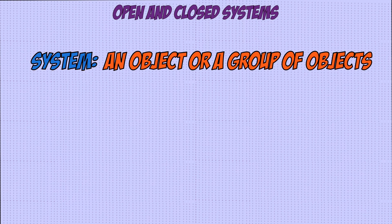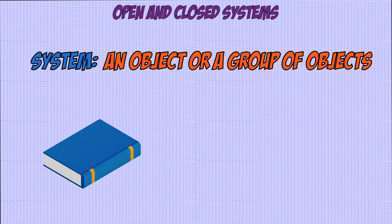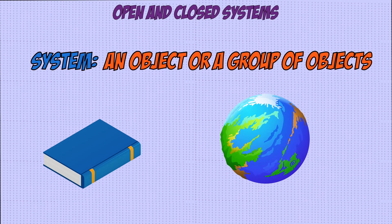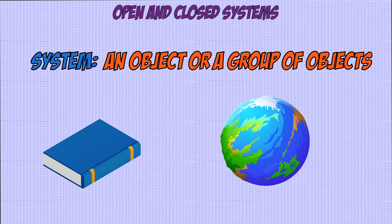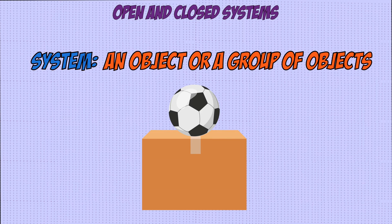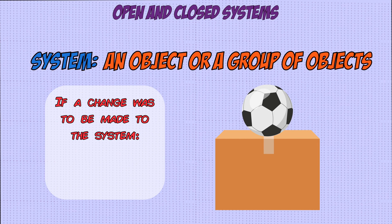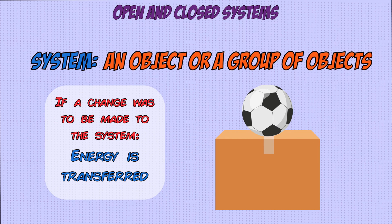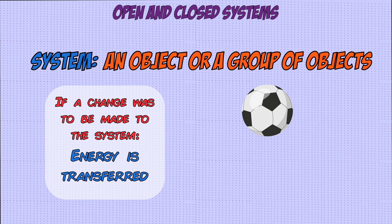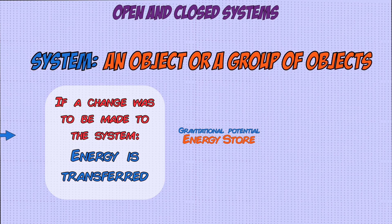First, let's define the term system in physics. A system is either a single object or a group of objects — this can be as simple as a single object like a book or as complicated as an entire planet. For example, we can define a system as a ball on a box. If there's no change to the system, nothing happens and the ball remains on the box. But if you were to make a change, energy will be transferred from one store to another.